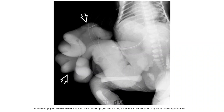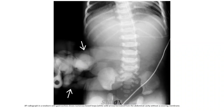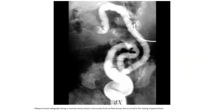Herniated bowel from the abdominal cavity without a covering membrane is clearly seen. AP radiograph in a newborn with gastroschisis again shows numerous bowel loops herniated from the abdominal cavity without a covering membrane. Oblique frontal radiograph during a contrast enema demonstrates a microcolon from colonic atresia occurring in the setting of gastroschisis.